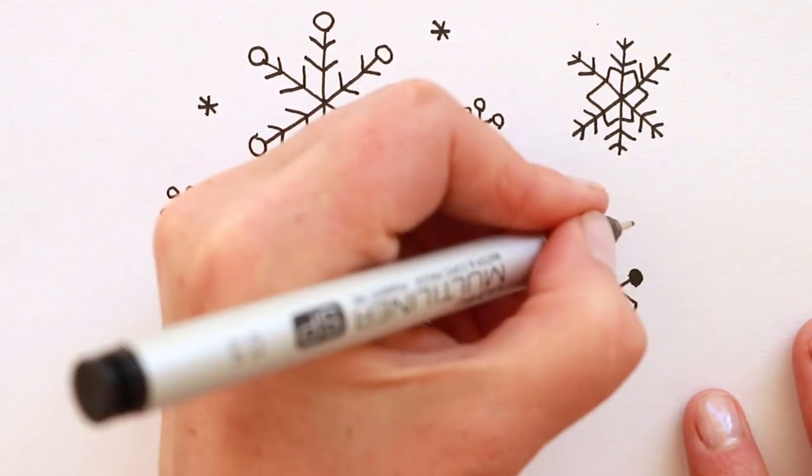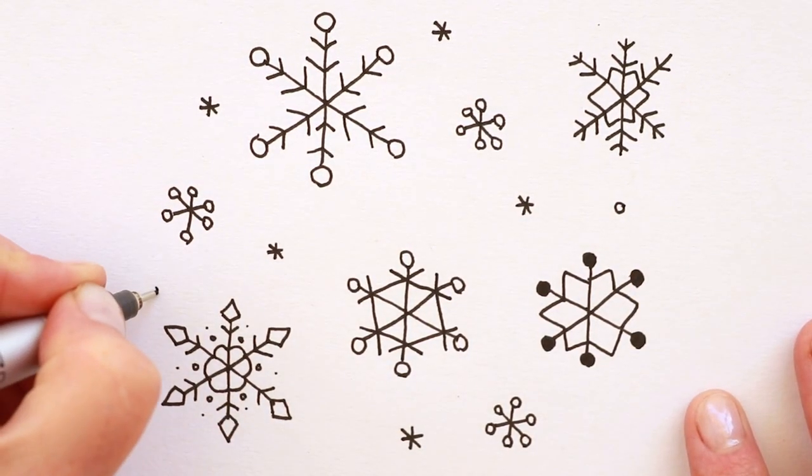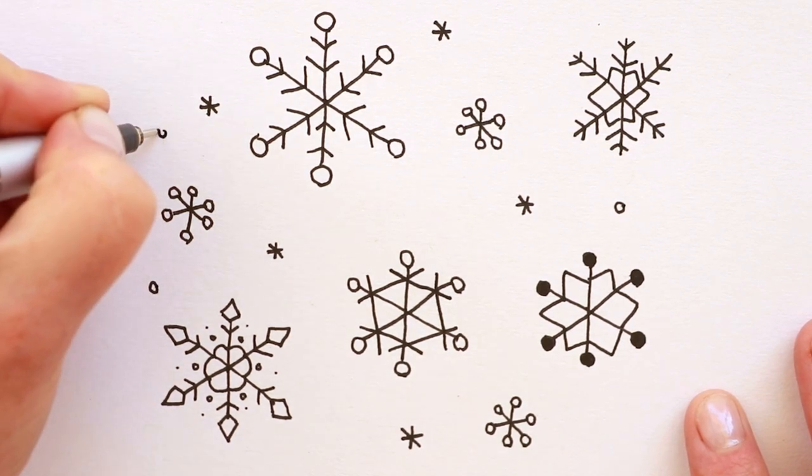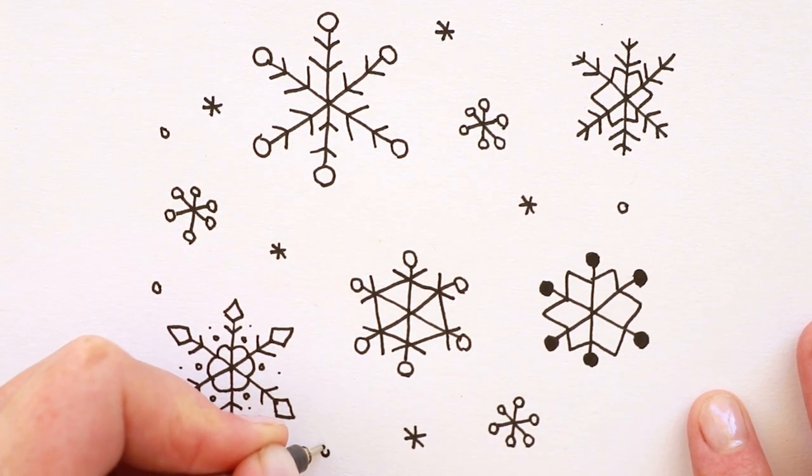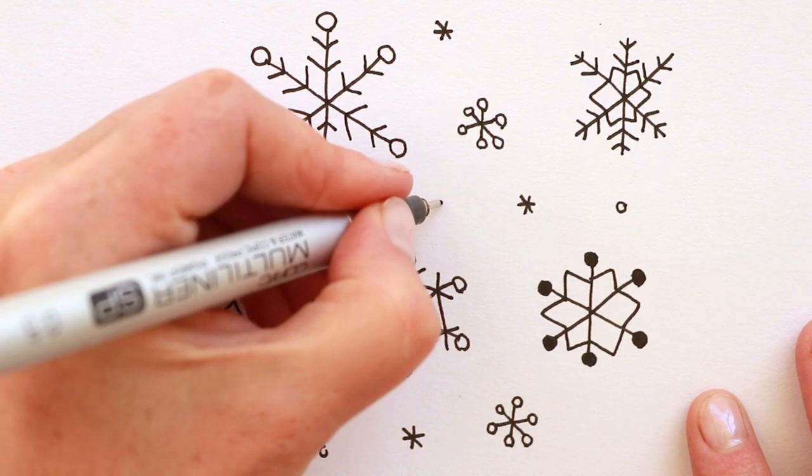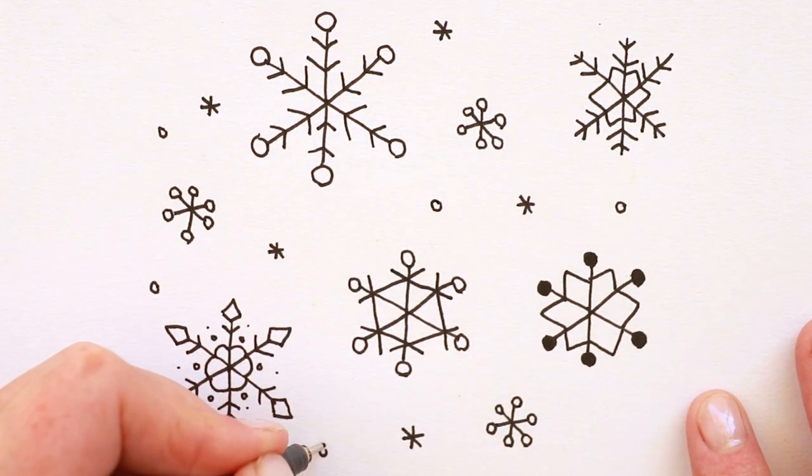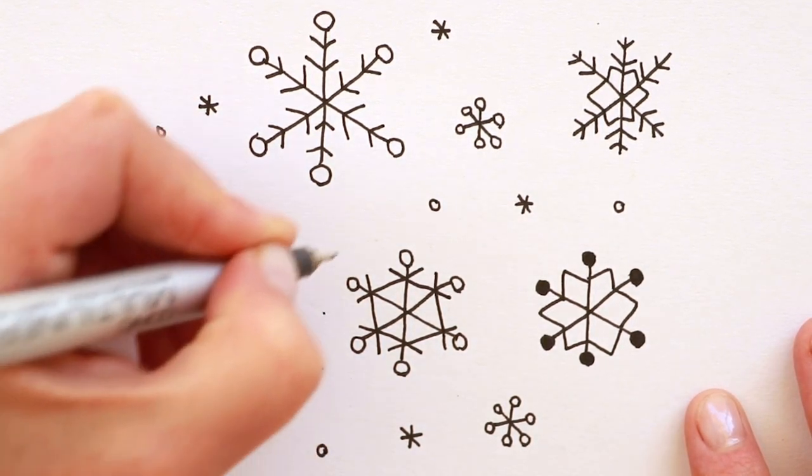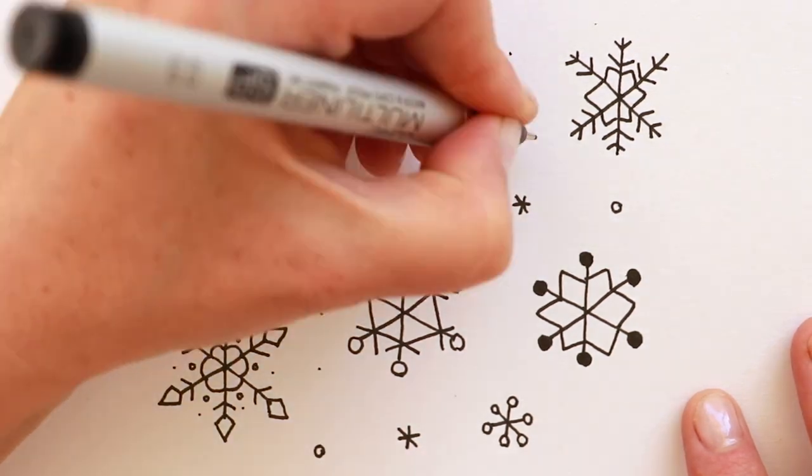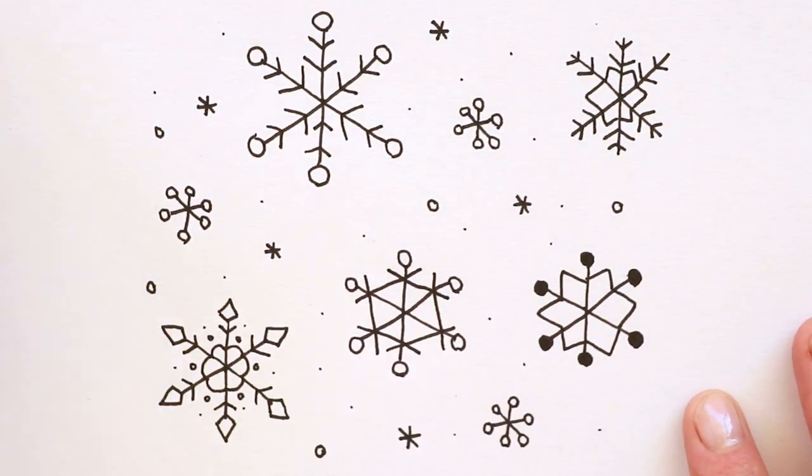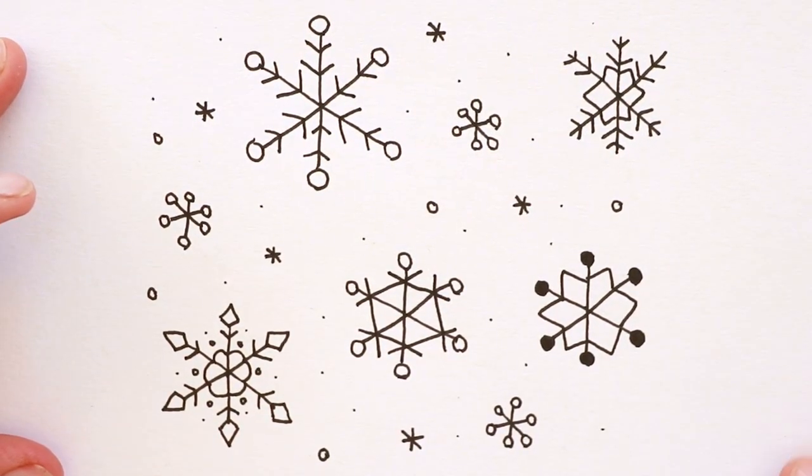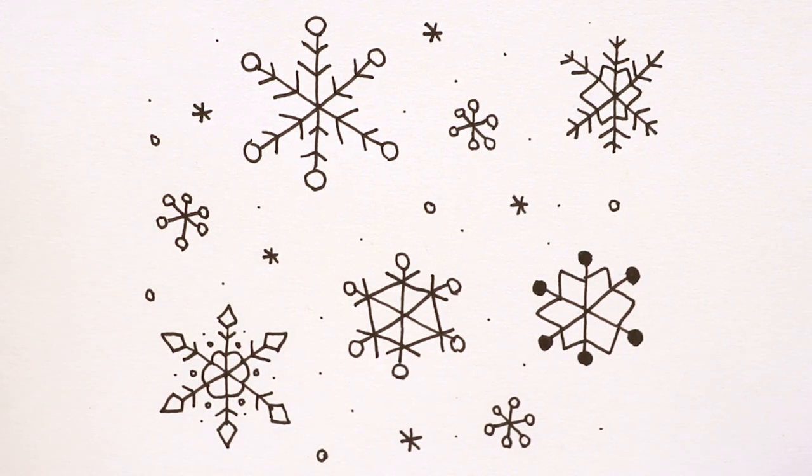And then let's even do some circles. These are maybe some little snowflakes or drops. And you can even add some snow powder with the little dots. Look how cute. Let me know in the comments what would you do with this design. How could you use it?